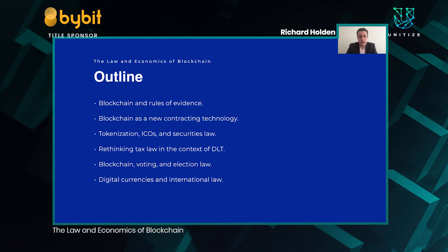I'm going to cover a few different areas of law. The first is blockchain and the rules of evidence, which is a building block for thinking about the implications of blockchain for other areas of law. The second is to think about blockchain as a new contracting technology — potentially a superior contracting technology in some ways — and what the implications of that are, in particular for an old but very important literature on the boundary of the firm. The third thing is to think about tokenisation, ICOs, and some of the issues to do with securities law around that.